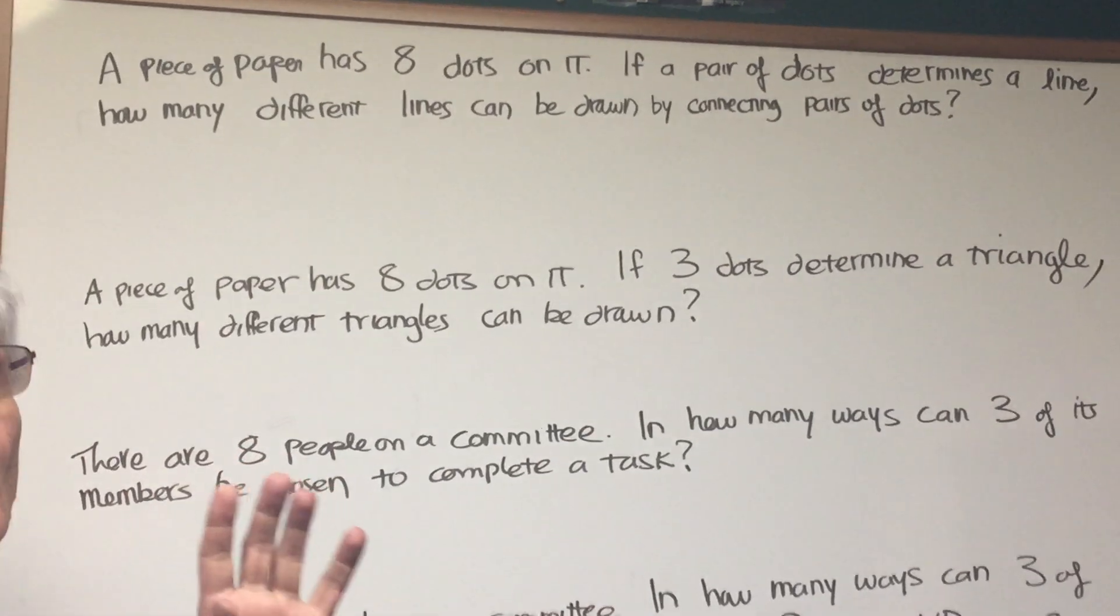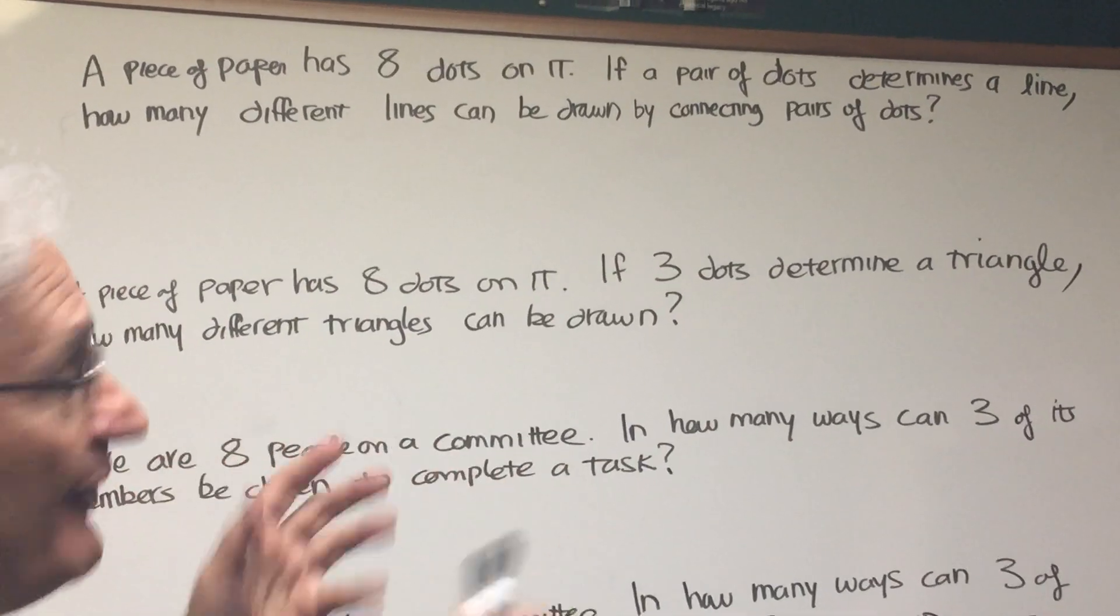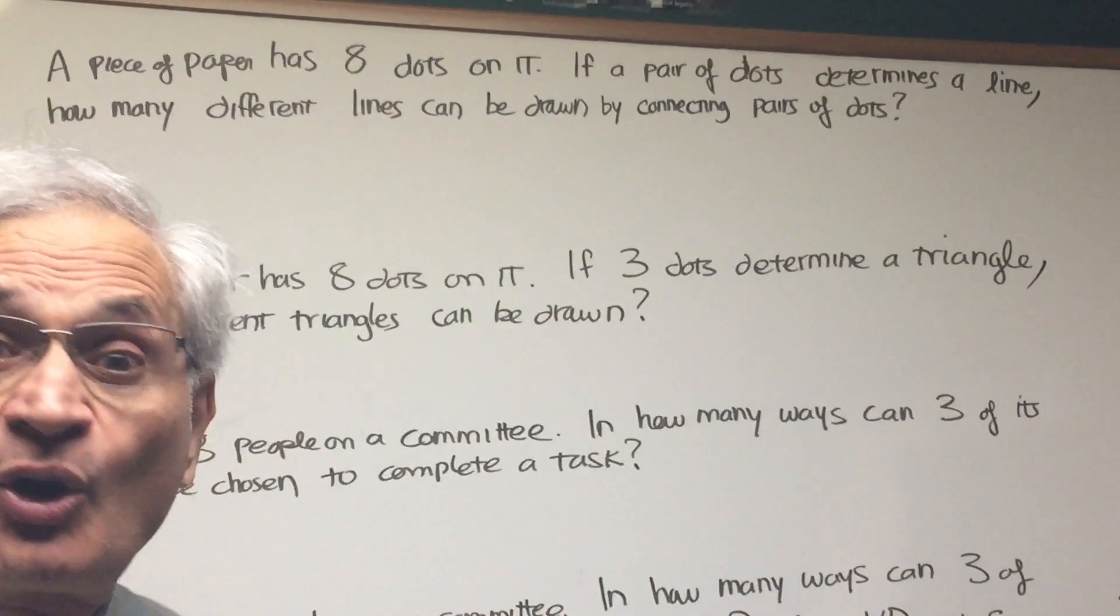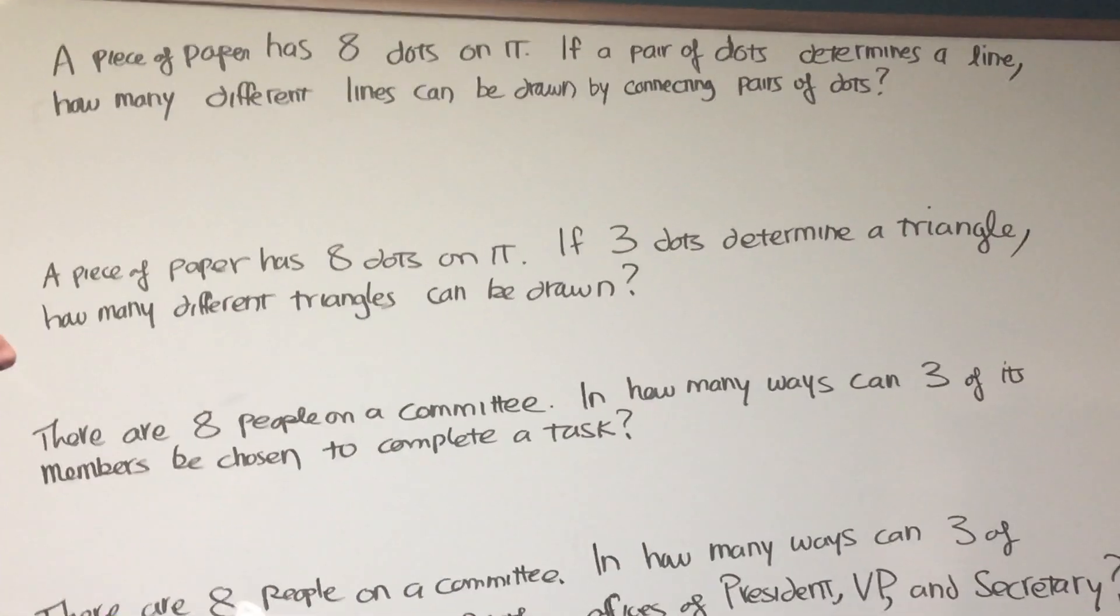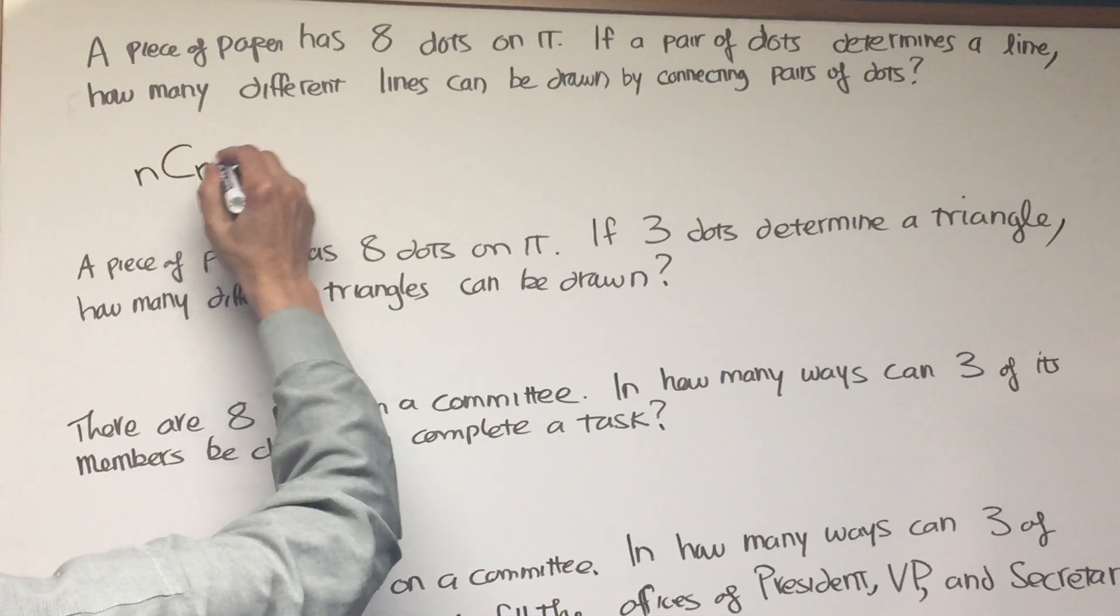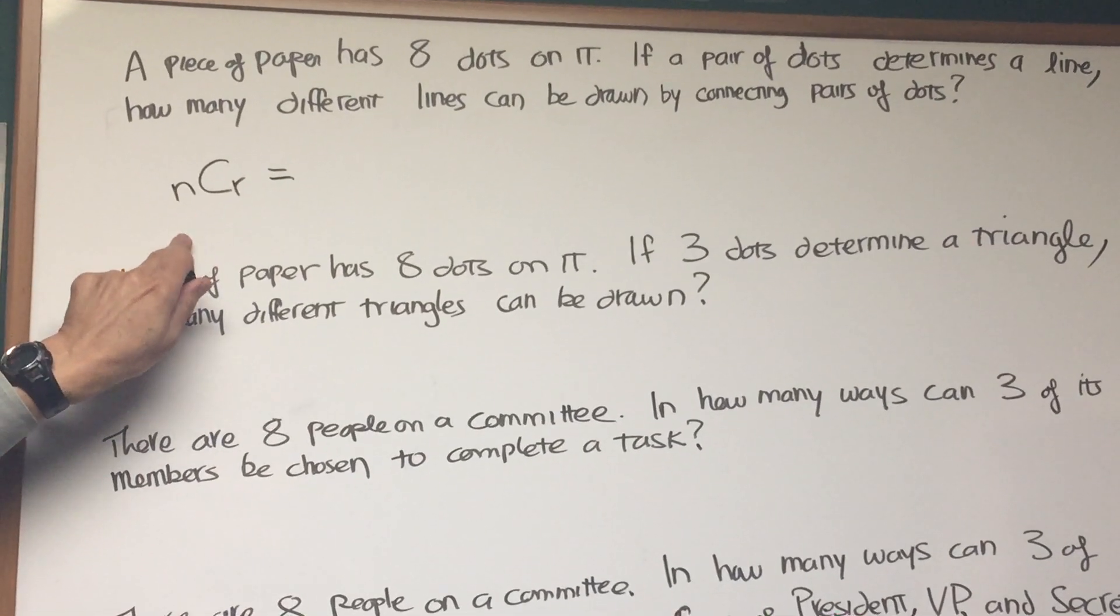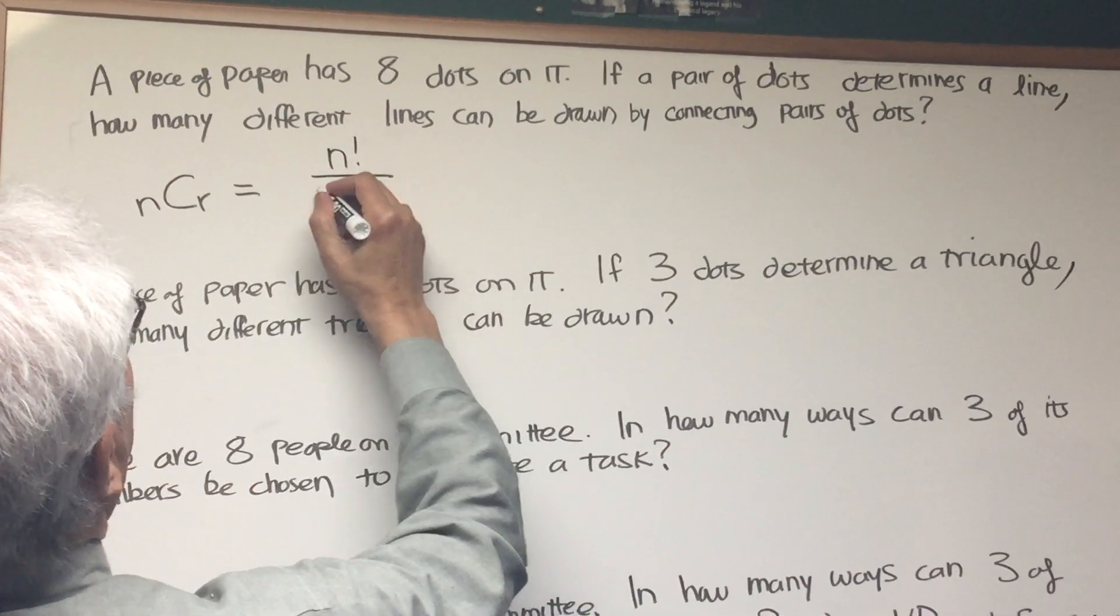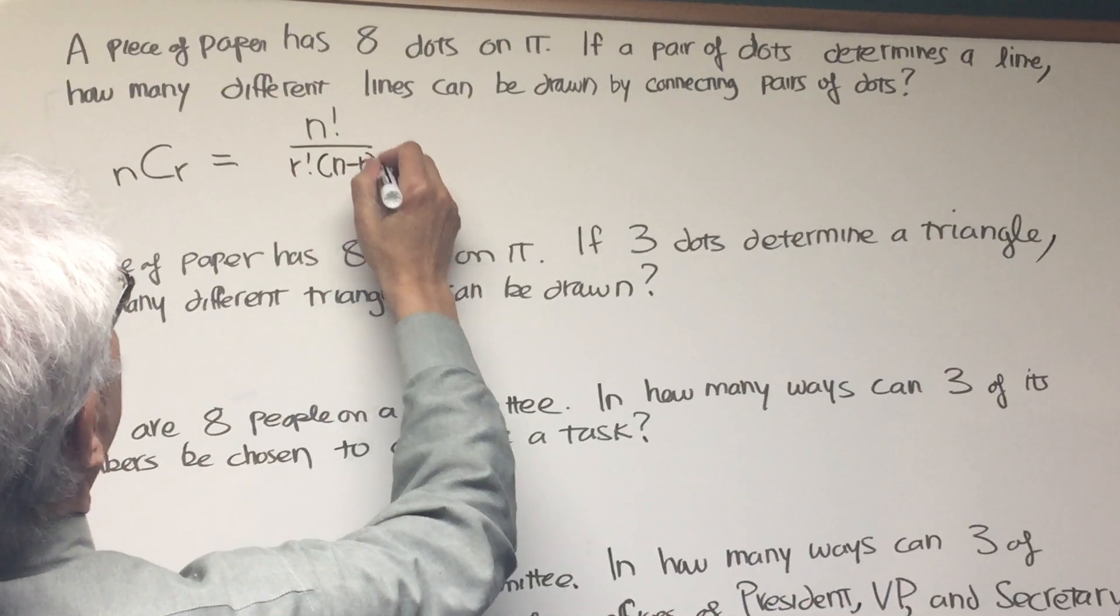Let's assume that these dots, no three dots are collinear. They're spread out on, let's say, a circle. That's one way of arranging the dots. Well, we're taking eight things two at a time. Order doesn't matter because it doesn't matter from which end you connect the dots. They're both the same, so order doesn't matter. So we're going to use the combination formula NCR. The number of ways of choosing R things out of a total of N things when order does not count. And that formula is N factorial over R factorial divided by N minus R factorial.